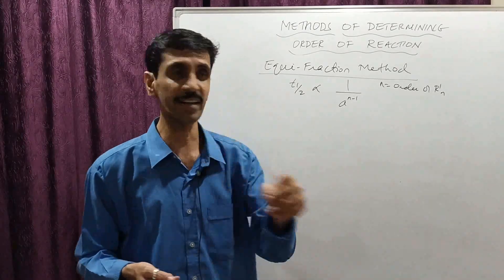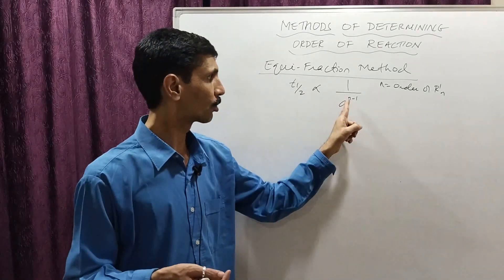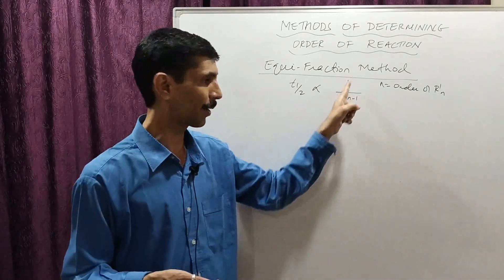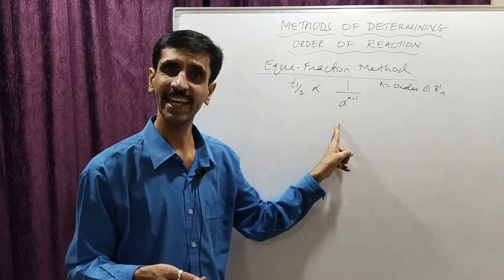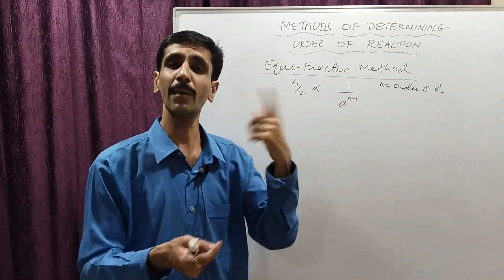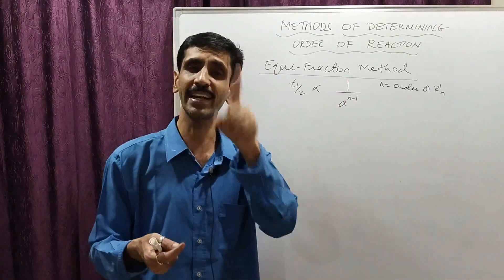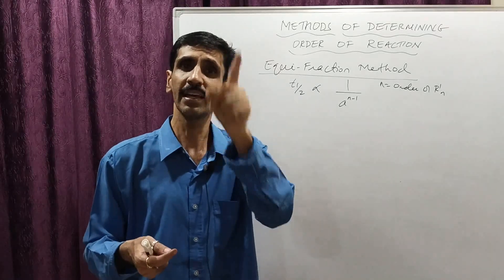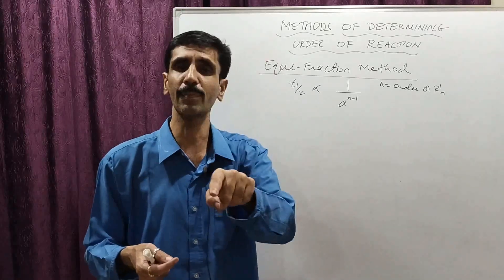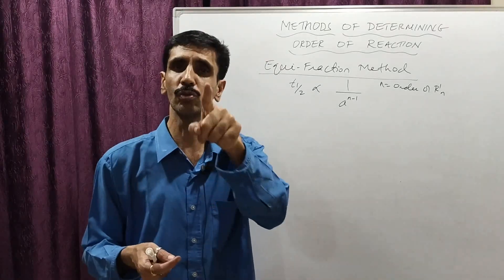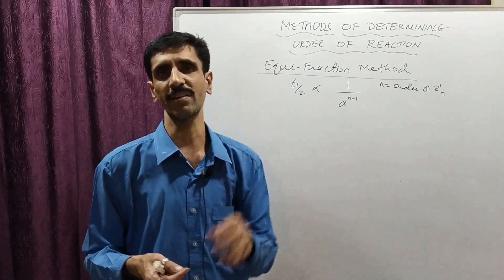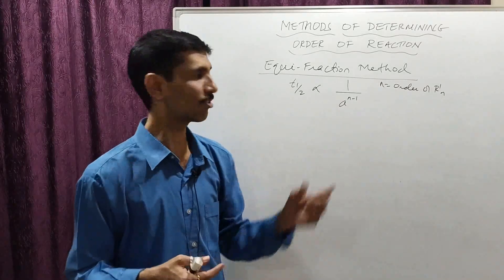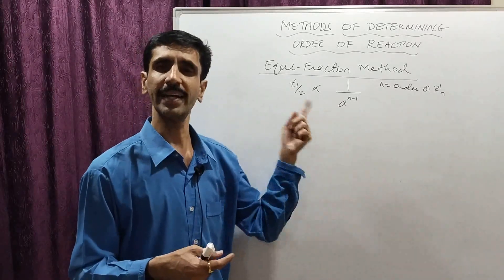If it is second order, then 2 minus 1 equals 1, so we get 1 upon a. For a second order reaction, the half time is inversely proportional to the initial concentration.